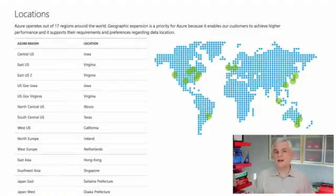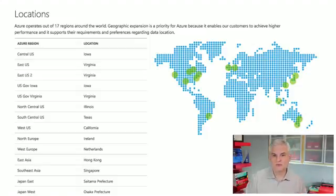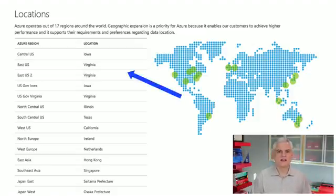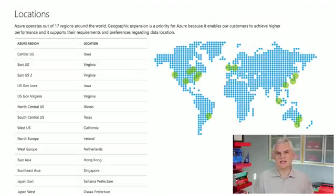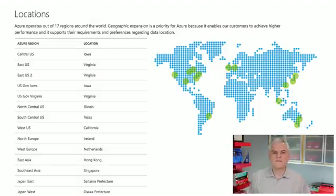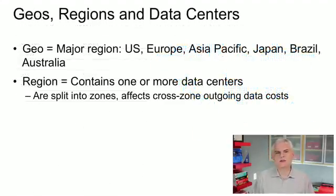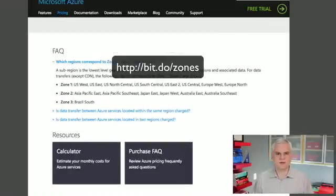A given region may have more than one data center. For example, there's the U.S. East region, which has two data centers both in the state of Virginia. There's also a third region in the state of Virginia, but it looks like it's exclusively used by the U.S. government. Furthermore, these regions are split or associated with zones — you can see on screen some of the zones; there are three zones.